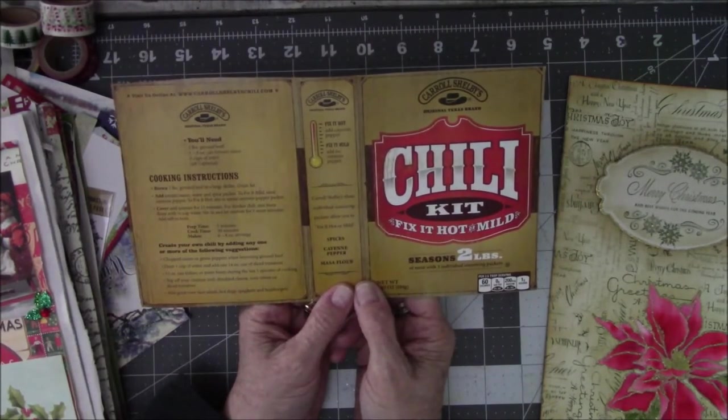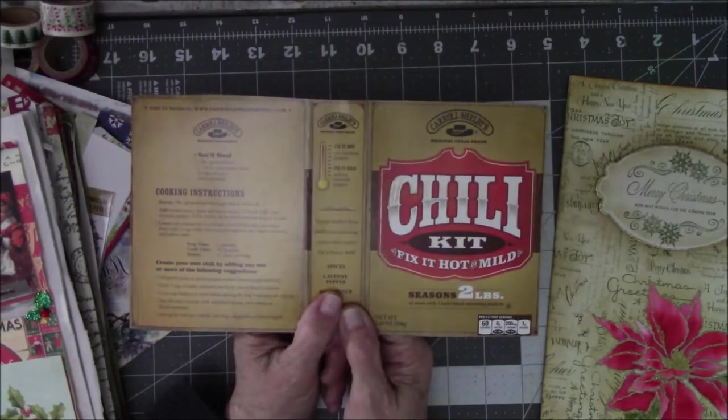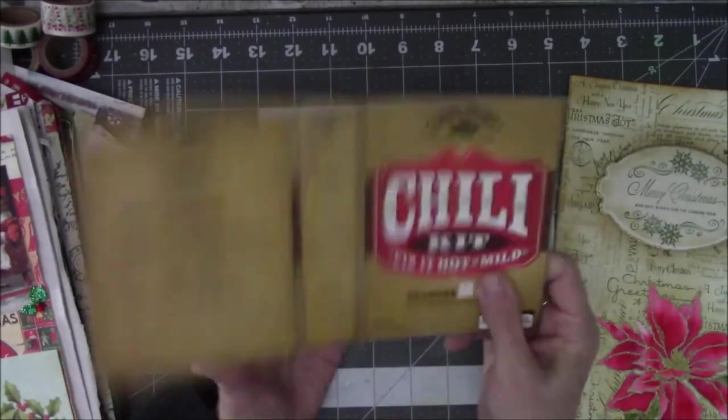So, what I'm going to do is, I'm going to take my standard size box I use for my Christmas stuff, which is the little chili, Carol Shelby's Chili Mix box. Because I don't want a big, huge Christmas thing. I just like, you know, I do little stuff. So, there's that.